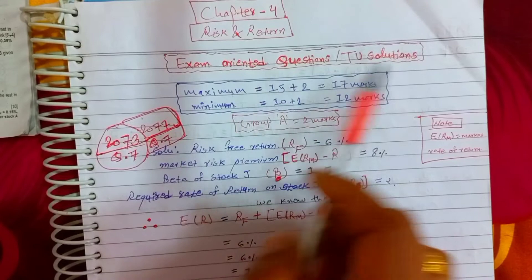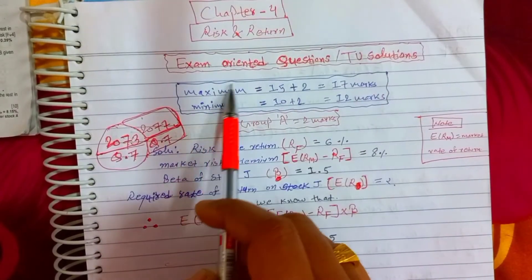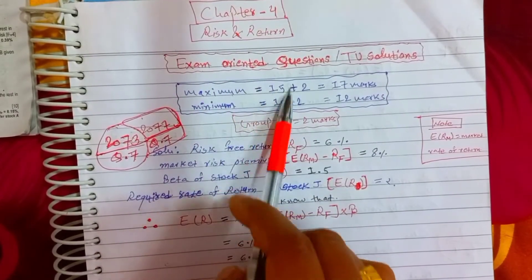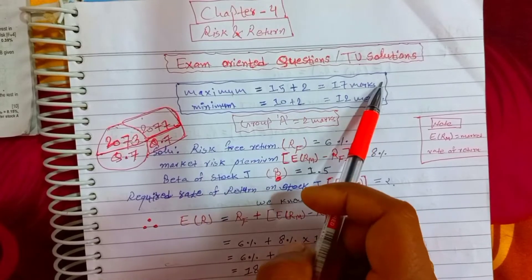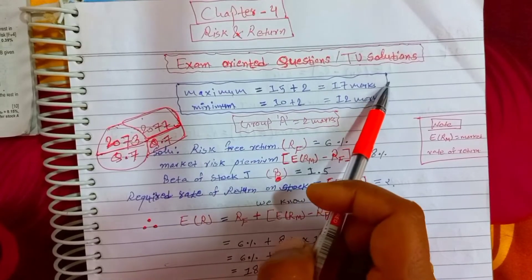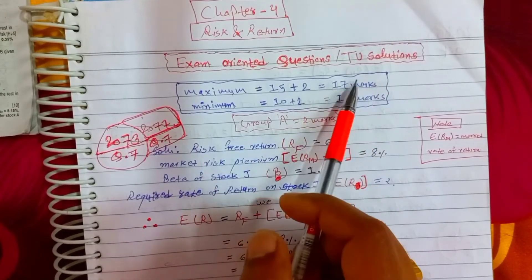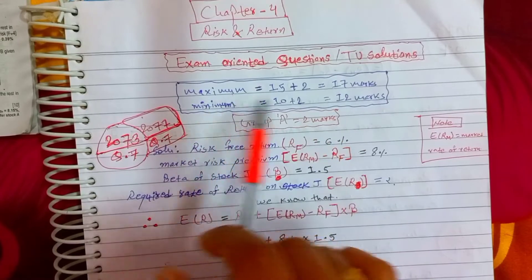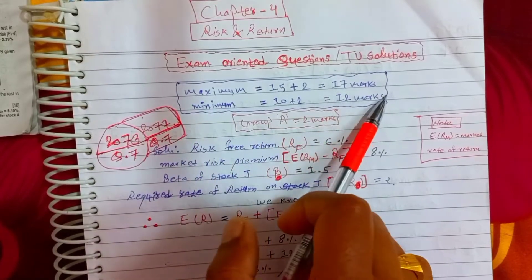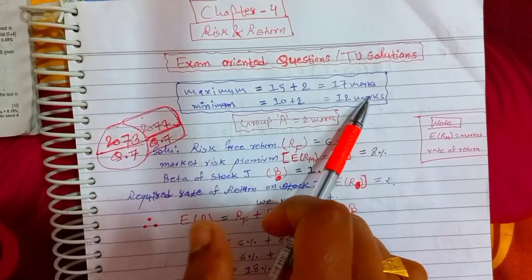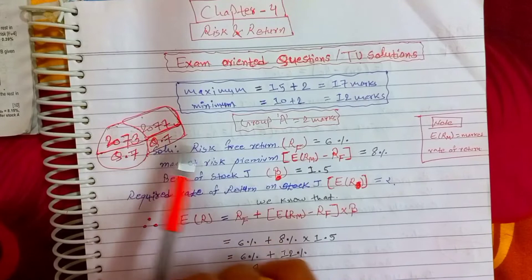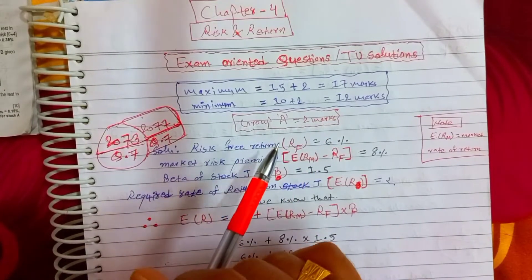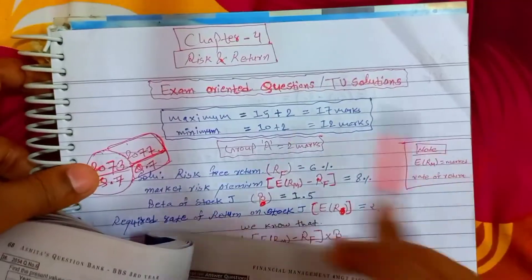T.U. solution. Chapter 15 maximum long questions go up to 17 marks maximum, and minimum 10 marks going up to 12 marks maximum. Today I am going to ask the 2-mark question on Risk and Return.